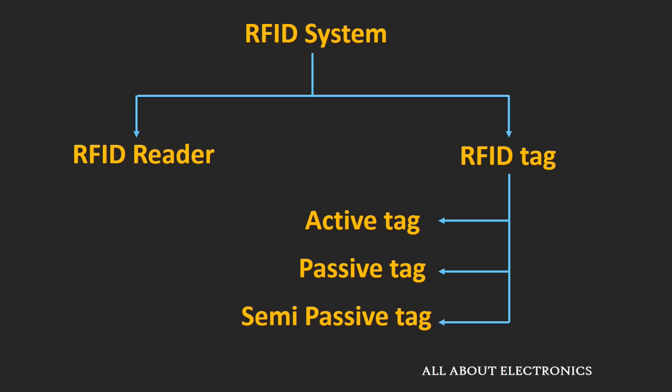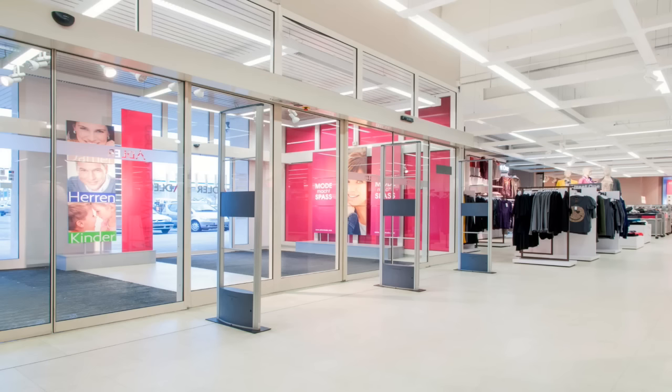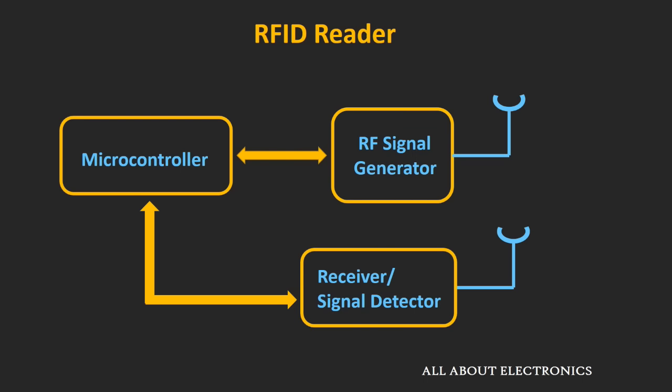Now let's see what is inside the RFID reader. RFID readers come in many sizes and shapes — a handheld reader, or as large as a door frame like those you see in shopping malls. The RFID reader mainly consists of three components: an RF signal generator, which generates radio waves transmitted via an antenna; a receiver or signal detector, to receive the feedback signal from the tag; and a microcontroller to process the information sent by the RFID tag. Many times, the RFID reader is directly connected to a computer.